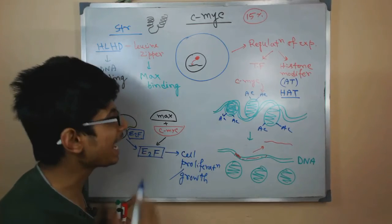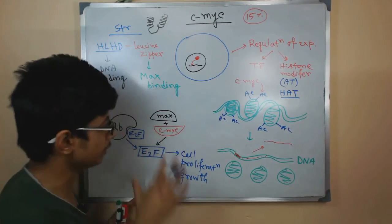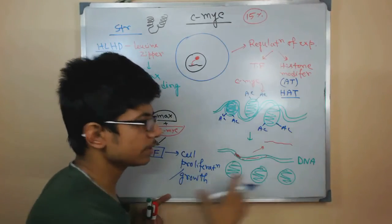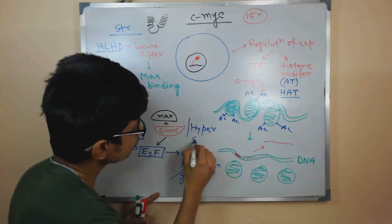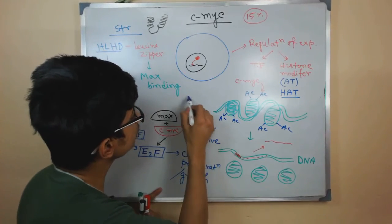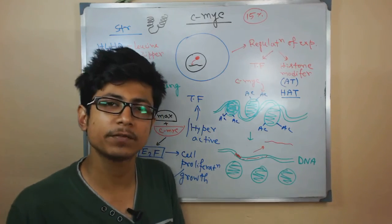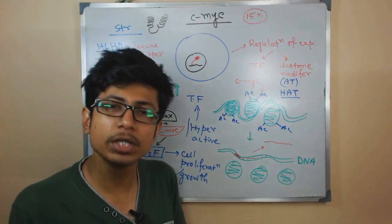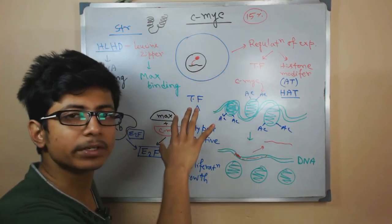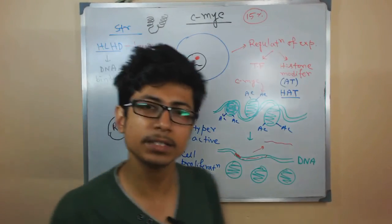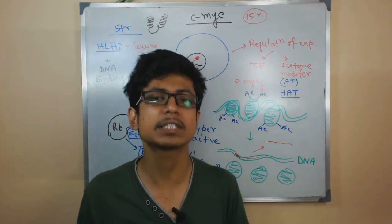If c-MYC gets hyperactivated — not in normal conditions where it regulates the cell cycle — it will turn on many transcription factors, which start synthesizing enzymes and proteins necessary for rapid cell division, growth, and proliferation, ultimately leading to cancer and malignancy. That is the story of c-MYC. If you like this video, hit the like button and subscribe to the channel.